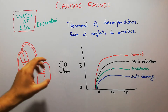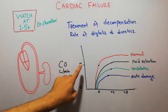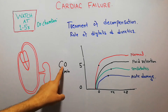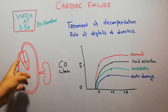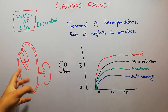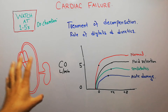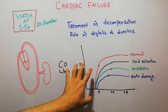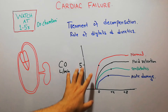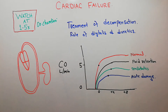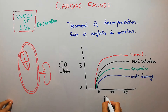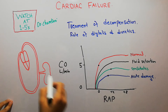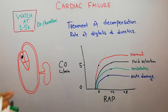Normally the heart is pumping five liters of blood per minute, which is known as the cardiac output, and it is sufficient for satisfying the needs of the human body in normal circumstances. Here we have plotted the cardiac output on the y-axis and the right atrial pressure on the x-axis, which is basically the pressure at the right atrium.